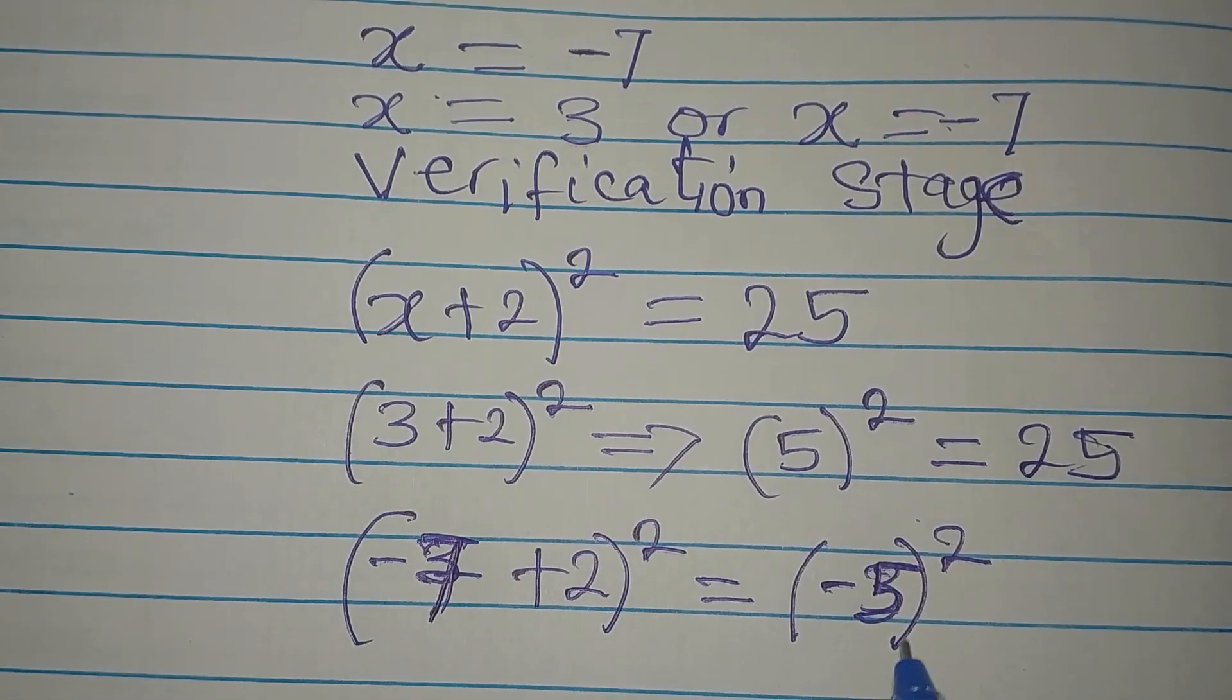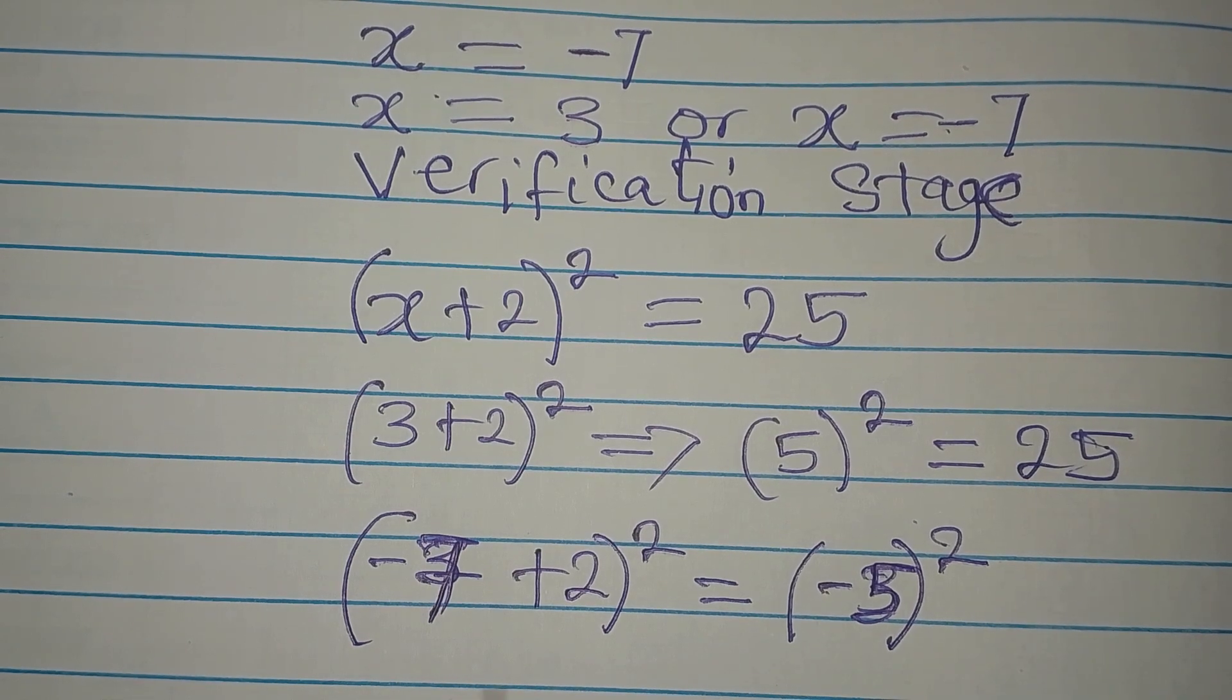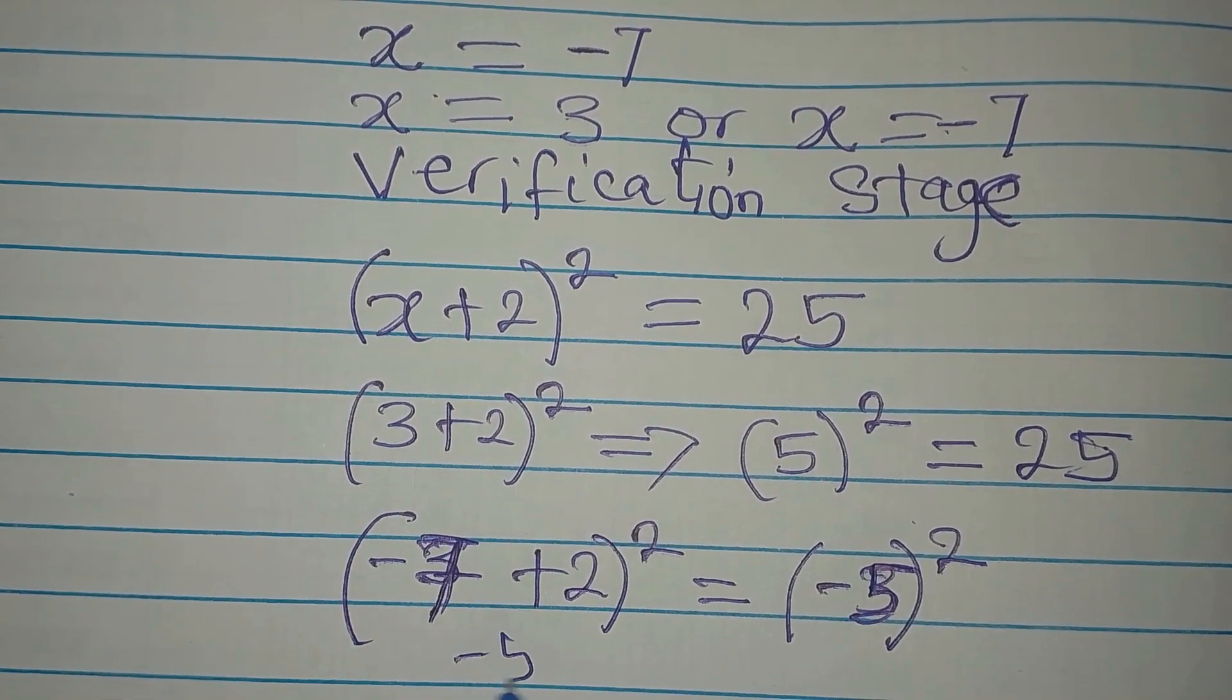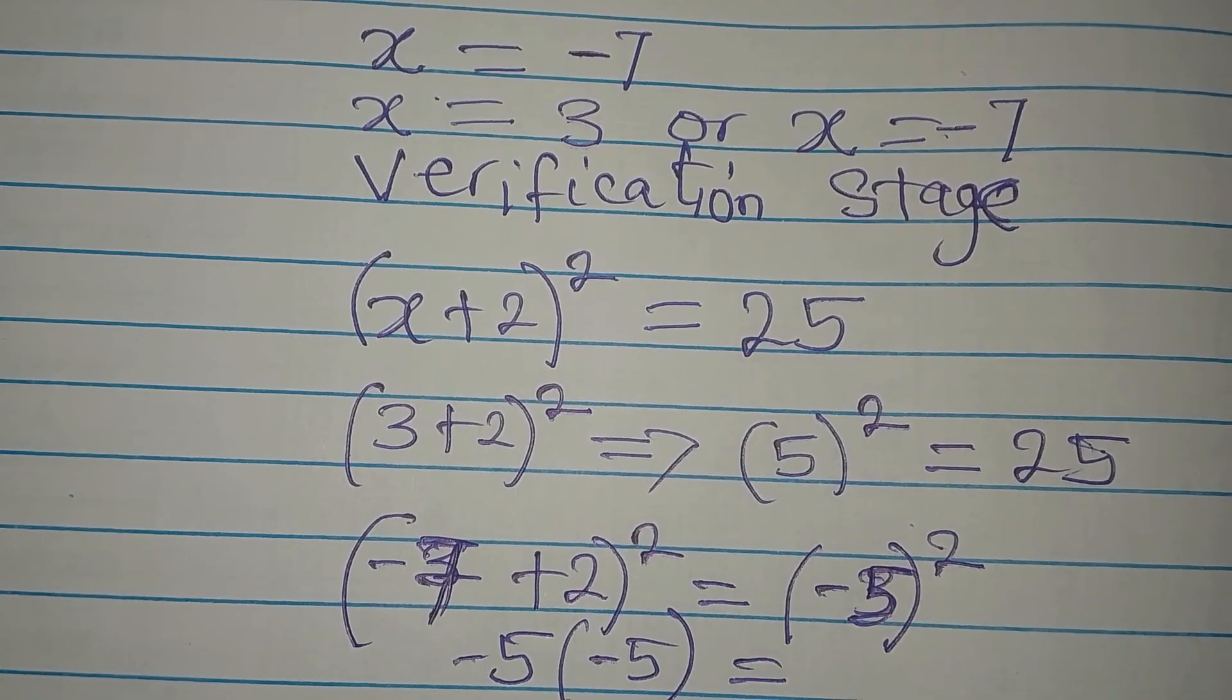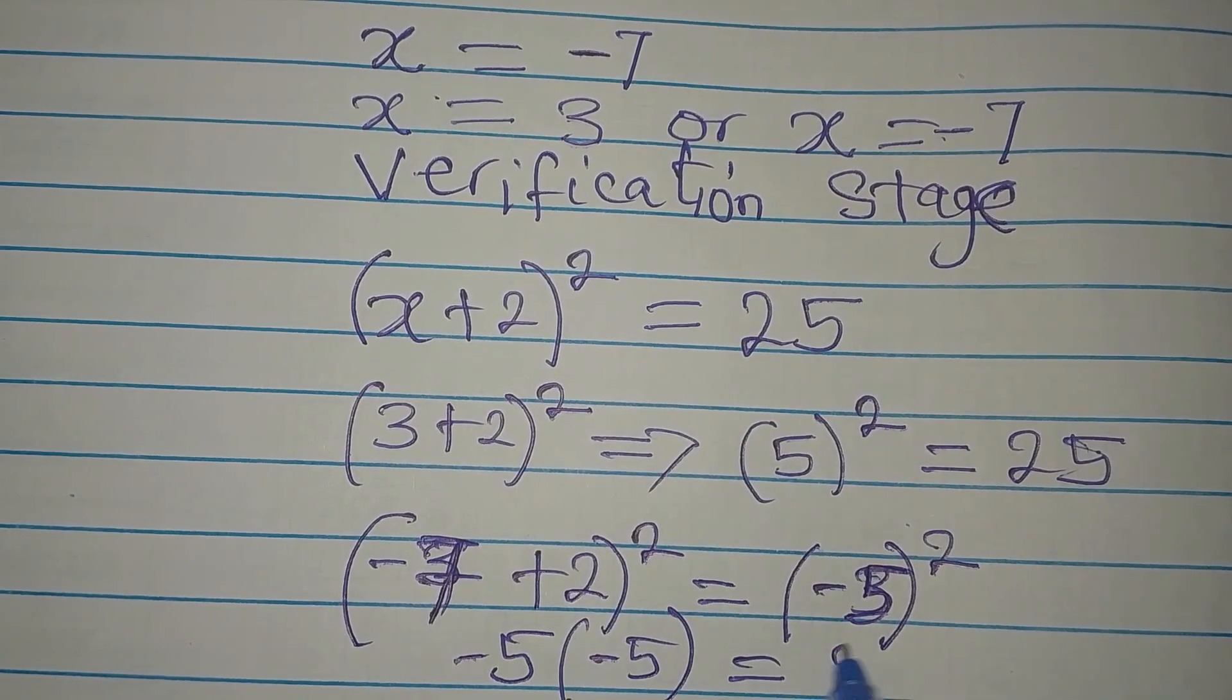And we will now square what we have here. That will give us minus 5 multiplied by minus 5. Negative negative is positive. Then 5 times 5 is 25.